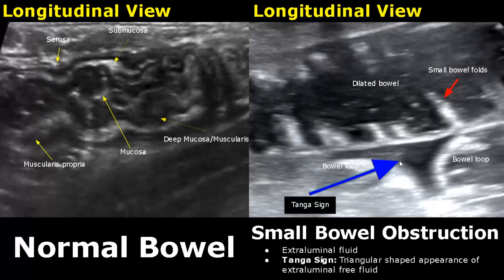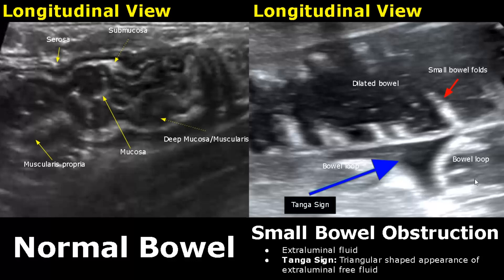Extraluminal fluid may also be seen in some cases of obstruction. Fluid will be visualized outside the bowel and is found between neighboring bowel loops — it is triangular in shape, and this fluid collection is called the tanga sign.